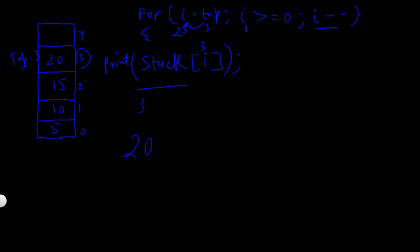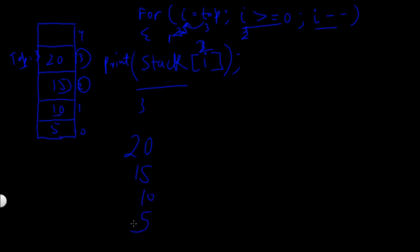Again this statement checks if i is greater than or equal to 0. Yes, i is 2, so i is greater than 0. Again the value of i will be decremented by 1, now i becomes 1, and then 10 will be printed, then 5 will be printed. This is how the display function works.